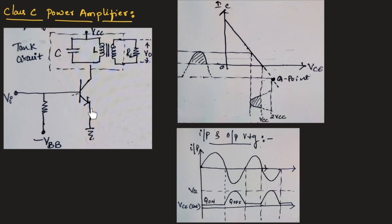For a class C operation, the transistor has a reverse bias across base and emitter terminal, since we are connecting minus VBB across the base terminal. This base emitter voltage is at Q point, which is below the cutoff region. This minus VBB is connected to the base circuit, which reverse biases the base emitter junction.